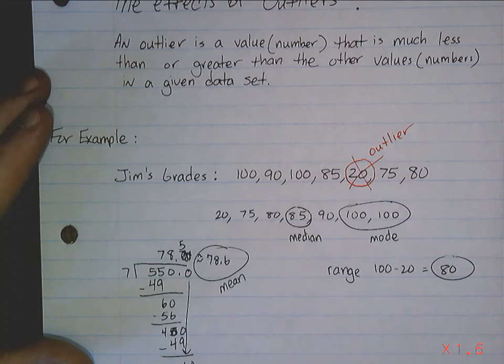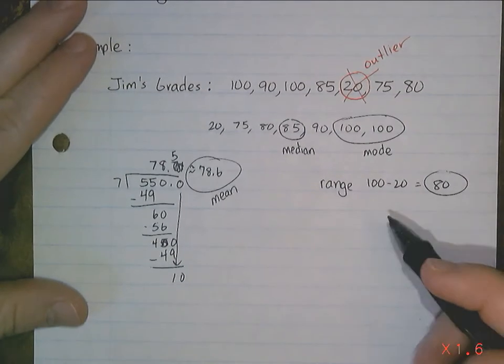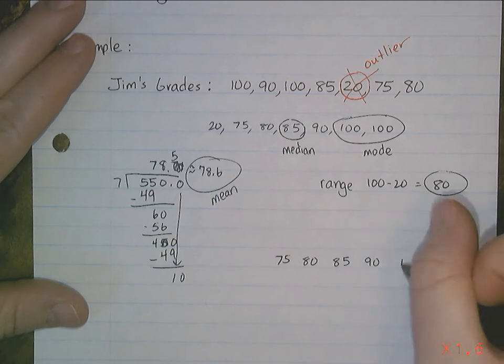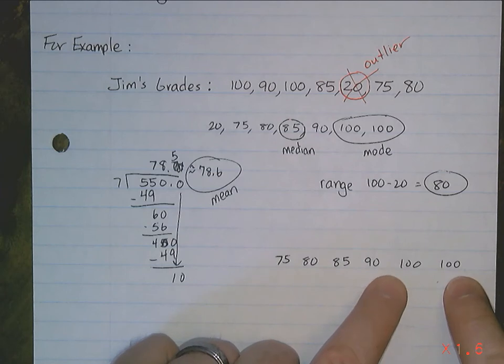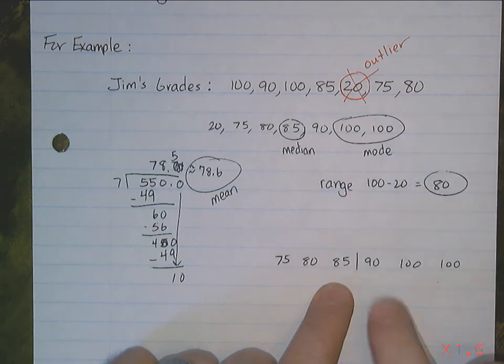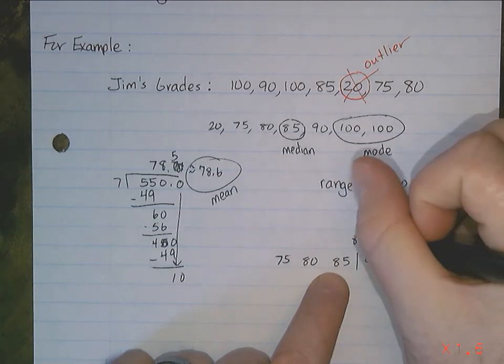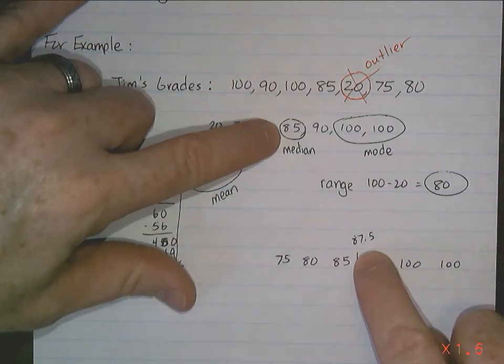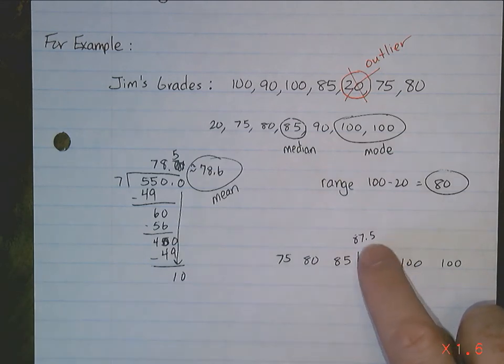Let's see how this all changes. So instead of having this data set, your data set would look like this: 75, 80, 85, 90, 100, 100. Your mode would still be 100. Your median would be basically between here. You had three numbers here, three numbers here. So somewhere between 85 and 90. That's basically 87.5 is going to be your median. If you look up here, the median is 85, but without the 20, it becomes 87.5. So it goes up just a little bit. It affects it just a little bit. Not too bad. It doesn't affect the mode at all. It affects the median a little bit.